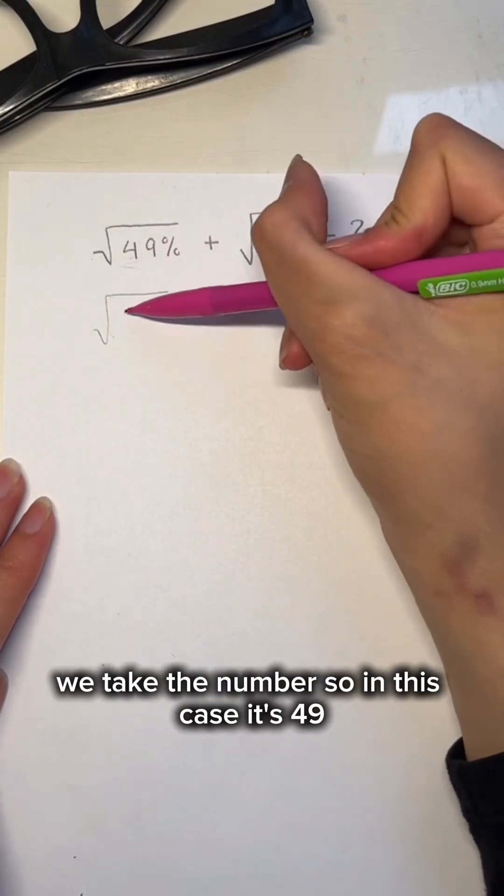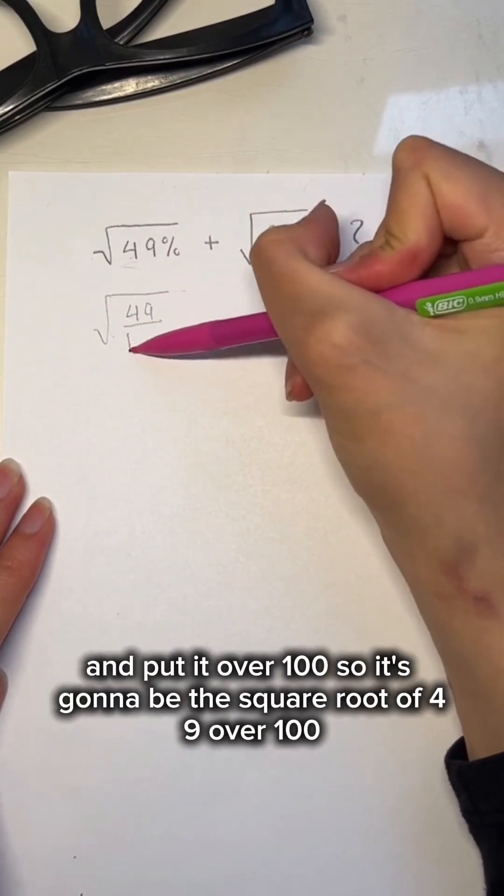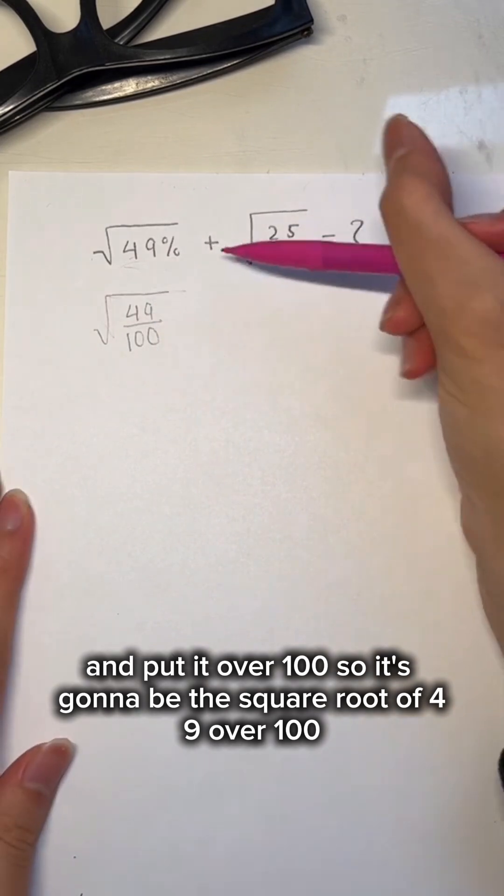we take the number, so in this case it's 49, and put it over 100. So it's going to be the square root of 49 over 100.